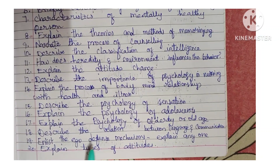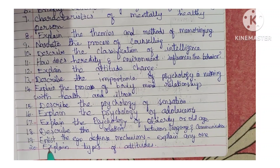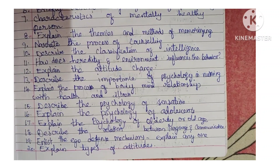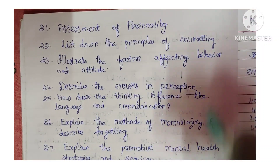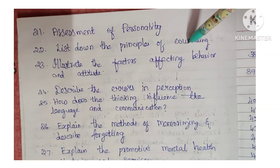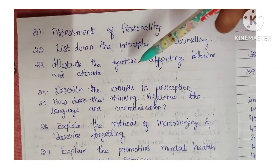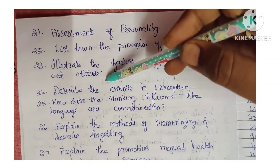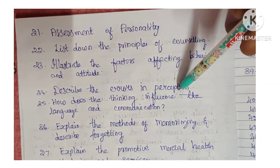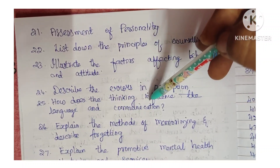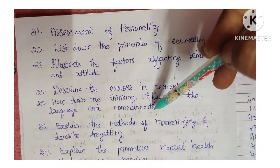Next: enlist the ego defense mechanism and explain any one in detail. Next: explain the types of attitudes. Next: assessment of personality. Next: list down the principles of counseling. Next: illustrate the factors affecting behavior and attitude. Next: describe the errors in perception. Next: how does thinking influence language and communication.